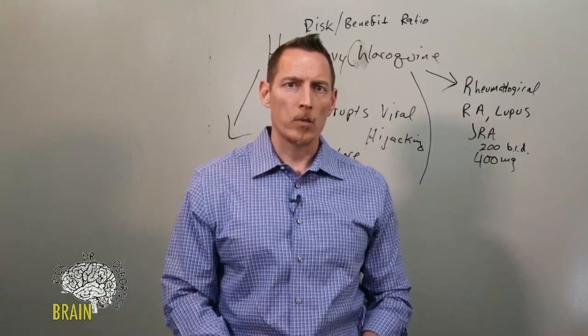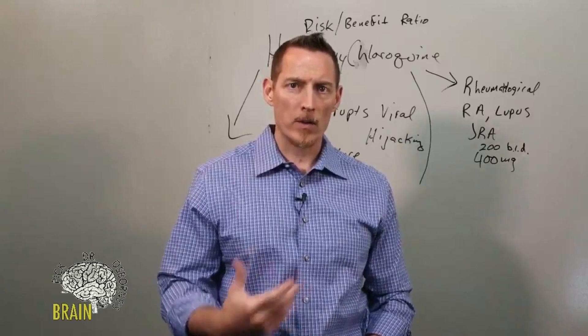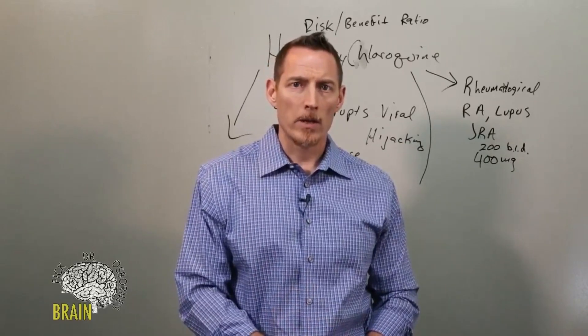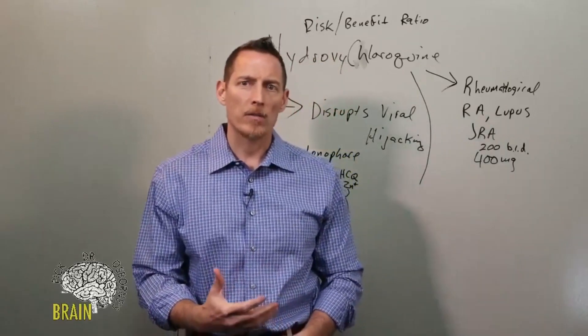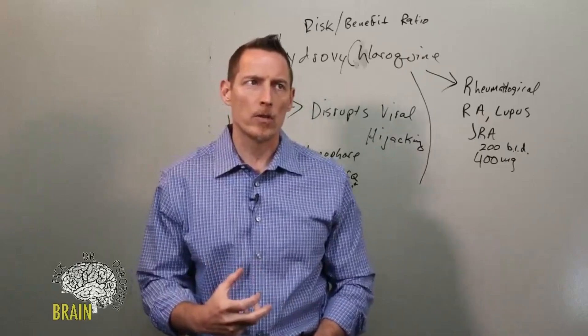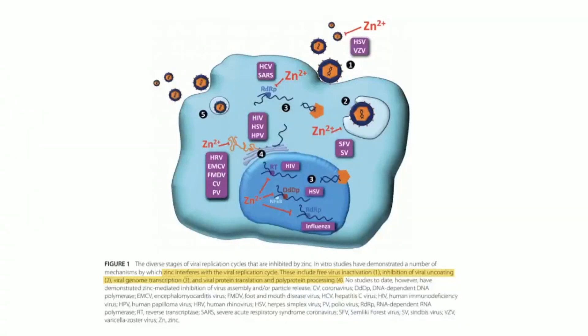If we're talking about some of the mechanisms of how zinc actually works, I want to show you another diagram that illustrates where zinc has a function or plays a role. If you look at this diagram here, you can see that zinc interferes with the viral replication cycle to include virus inactivation, the inhibition of viral uncoating, the viral genome transcription component, as well as viral protein translation and polyprotein processing. Zinc is known to block viral replication at four different locations using four different mechanisms.